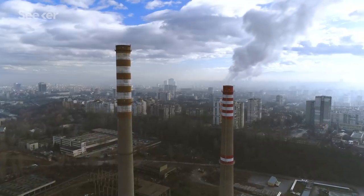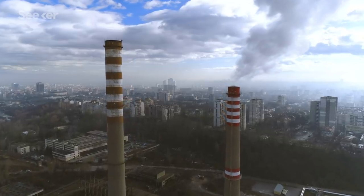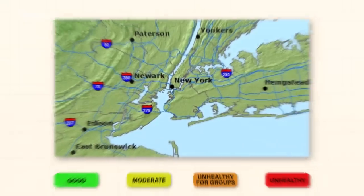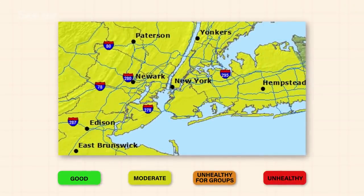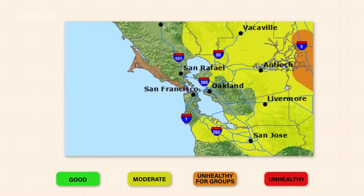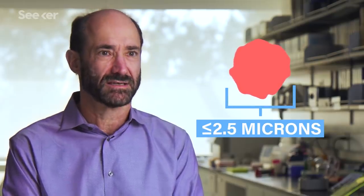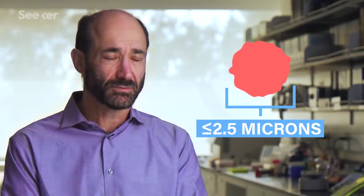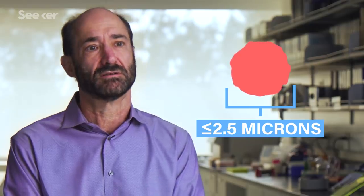People always studied environmental exposures at a city level. We know what the exposure looks like in New York City versus San Francisco versus Atlanta. They would study something called PM 2.5 - particulate matter that's 2.5 microns or less. That's what gets into your lungs and that's the air pollution that people are concerned about.